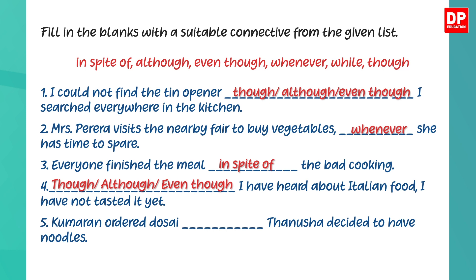Now the last sentence shows two children, and what these two children like to have is being compared. So it is correct to use the connective 'while'. You can complete the sentence with the word 'while'. I hope you got all your answers correct.